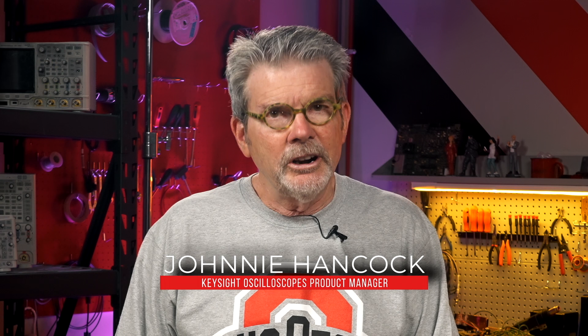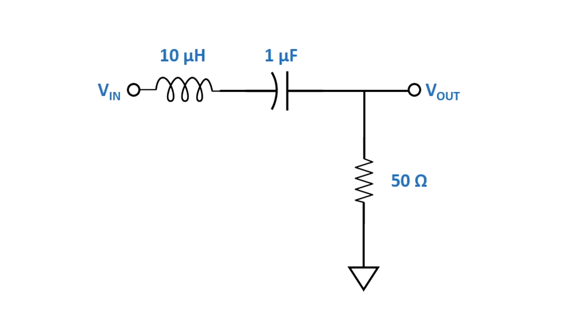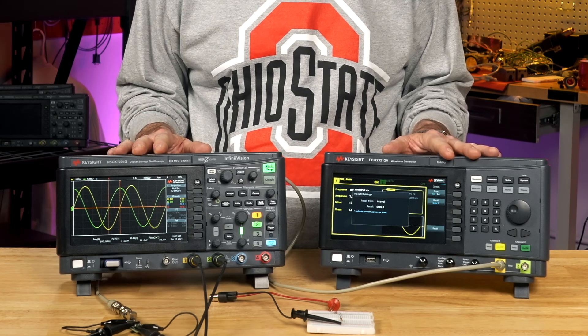I'm Johnny Hancock, product manager for Keysight's InfiniiVision X-Series oscilloscopes. In this lesson, we are going to characterize the gain and phase of a bandpass filter that consists of a series inductor, capacitor, and resistor, as you can see on your screen now. The measurement we are going to perform is called a frequency response analysis test, but most engineers simply call it a Bode plot test. I'll start by showing you how to create a Bode plot the old traditional way using an oscilloscope and a function generator, and then I'll show you a more automated way if your oscilloscope has a built-in generator and automatic Bode plot capability.